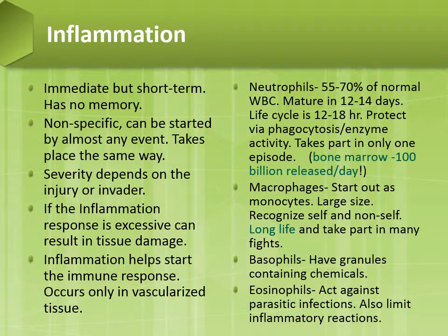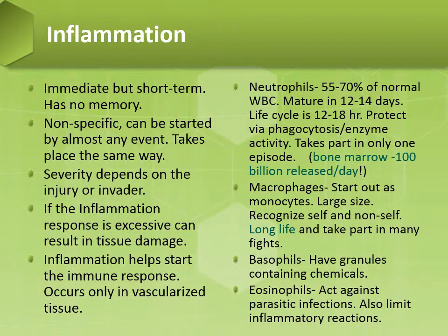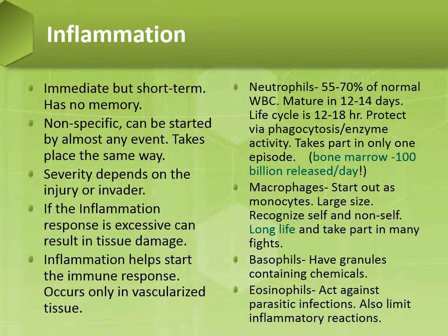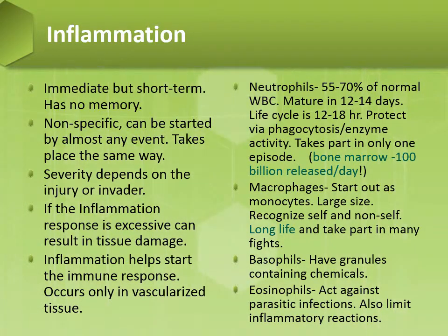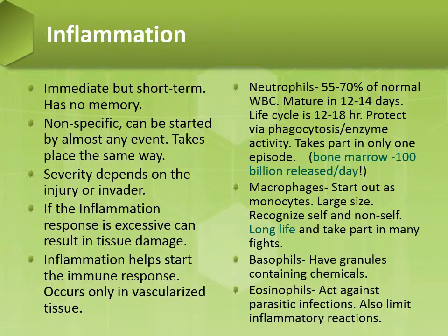Neutrophils are about 55 to 70% of the normal white blood cell. They mature in about 12 to 14 days, their life cycle is 12 to 18 hours, and they are protected by phagocytosis and enzyme activity, taking part in only one episode. Macrophages start out as monocytes — large in size, they can recognize self and non-self, have a long life, and take part in many fights. Basophils have granules containing chemicals. Eosinophils act against parasitic infections and also limit inflammatory reactions.